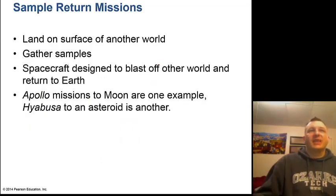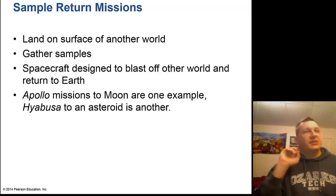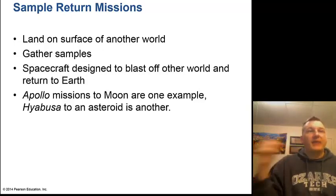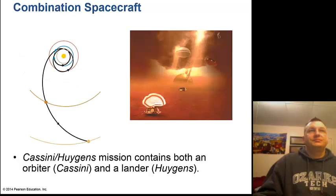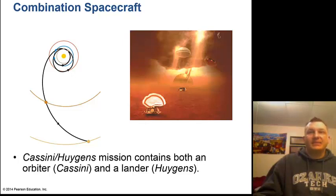Sample return missions land on another world, gather samples, then blast off and return to Earth — the Apollo Moon missions are an example, as is the asteroid sample return mission Hayabusa. Sometimes we combine two spacecraft: the Cassini-Huygens mission had the Huygens probe piggyback on Cassini, then land on Saturn's moon Titan — on a muddy beach of methane, it's so cold there. It's remarkable that we can send a spacecraft a billion miles away and have a probe land with a parachute on the muddy beach of a distant moon.